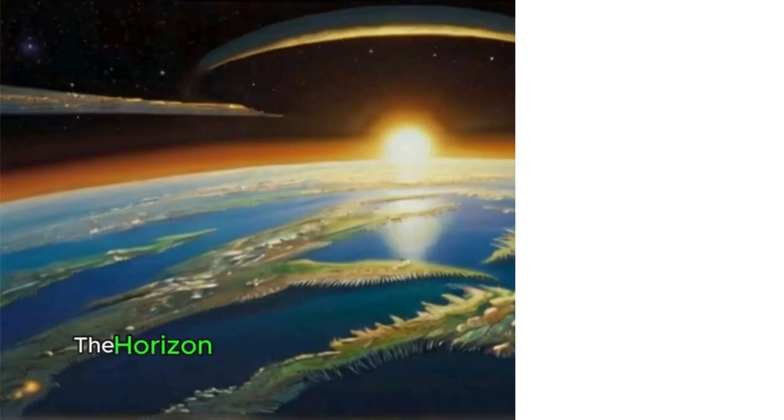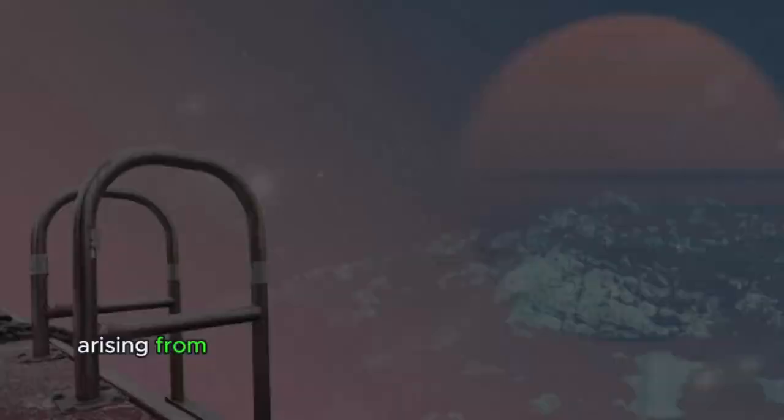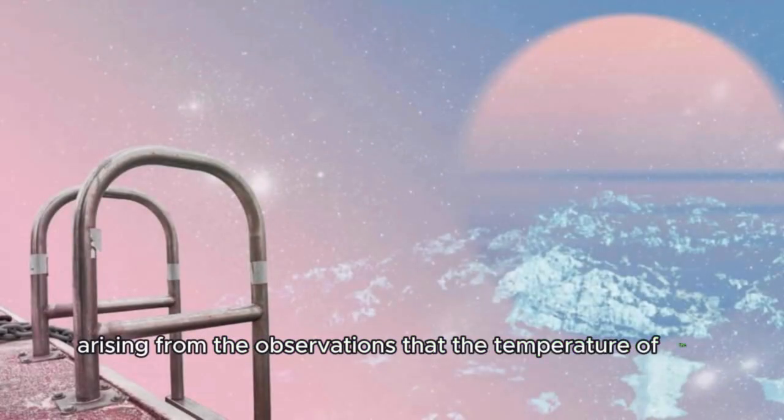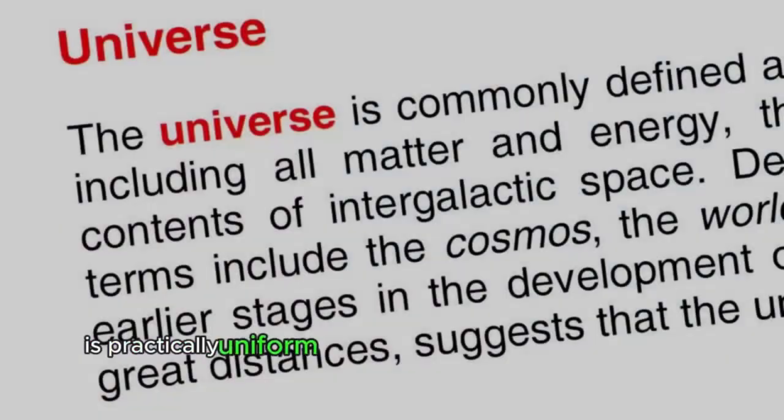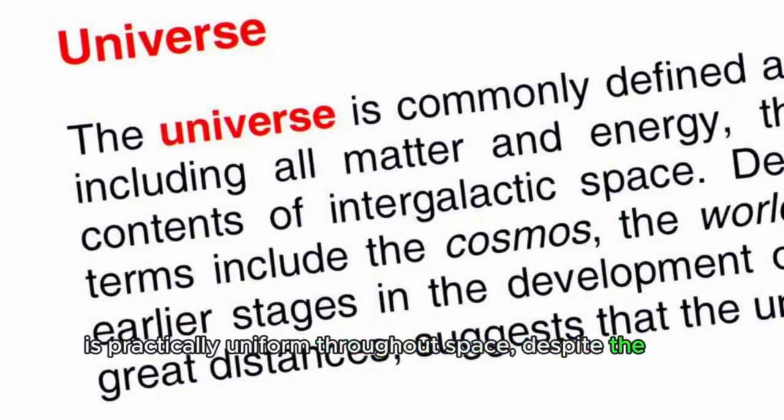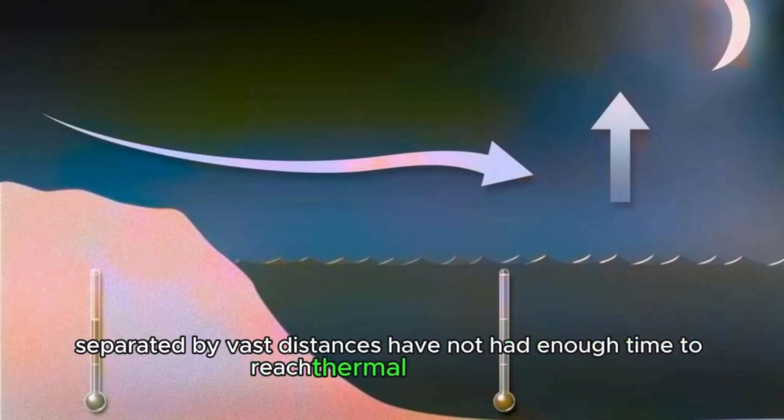The horizon problem, also known as the horizon paradox, is a paradox arising from the observations that the temperature of the cosmic microwave background radiation, CMB, is practically uniform throughout space, despite the fact that regions of the universe, separated by vast distances, have not had enough time to reach thermal equilibrium.